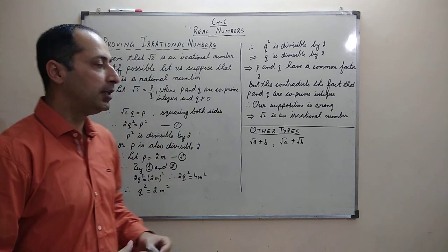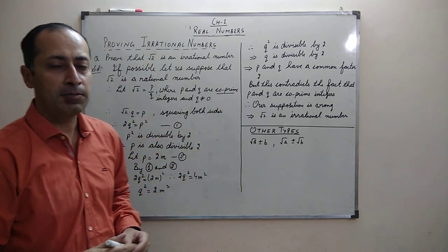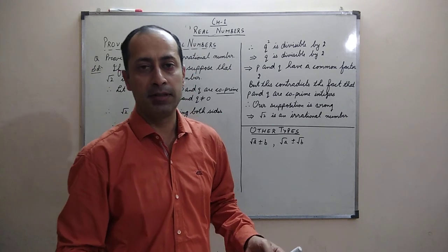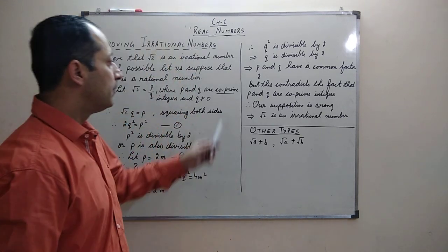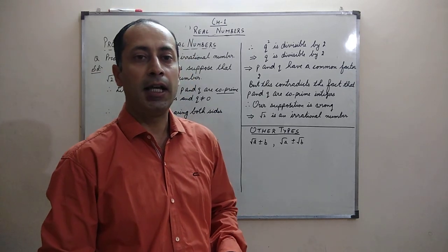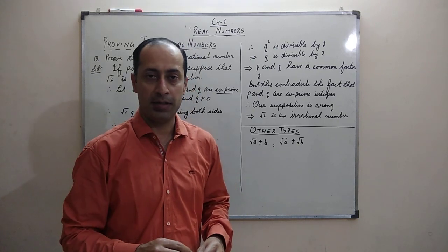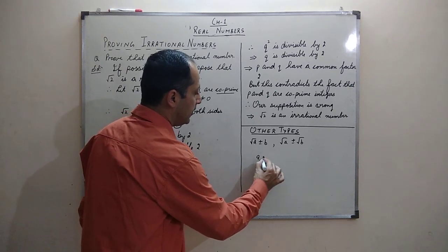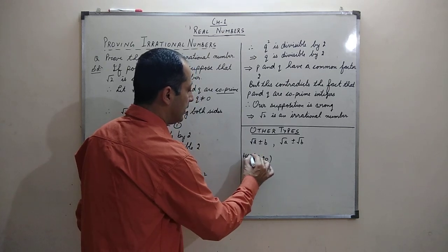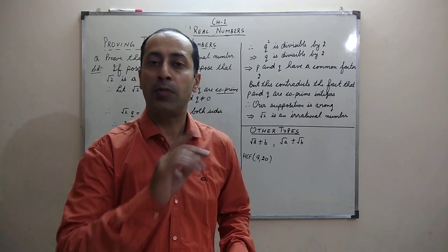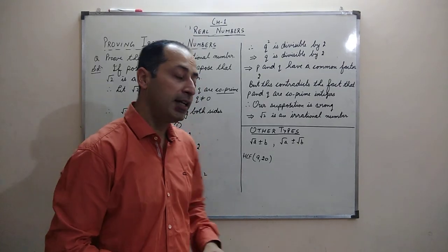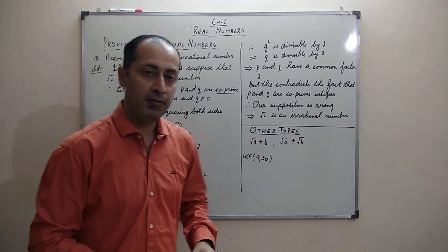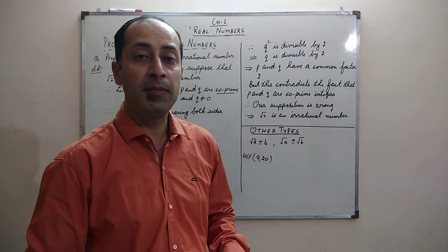There is a new term here: co-prime. Prime numbers are those which have only two factors, like 2, 3, 5, 7. Co-prime numbers are those in which the HCF of two numbers is only 1. For example, 9 and 20 are not prime numbers — they are composite — but their HCF is 1, so 9 and 20 are co-prime integers. So here, p and q being co-prime means HCF of p and q is 1.